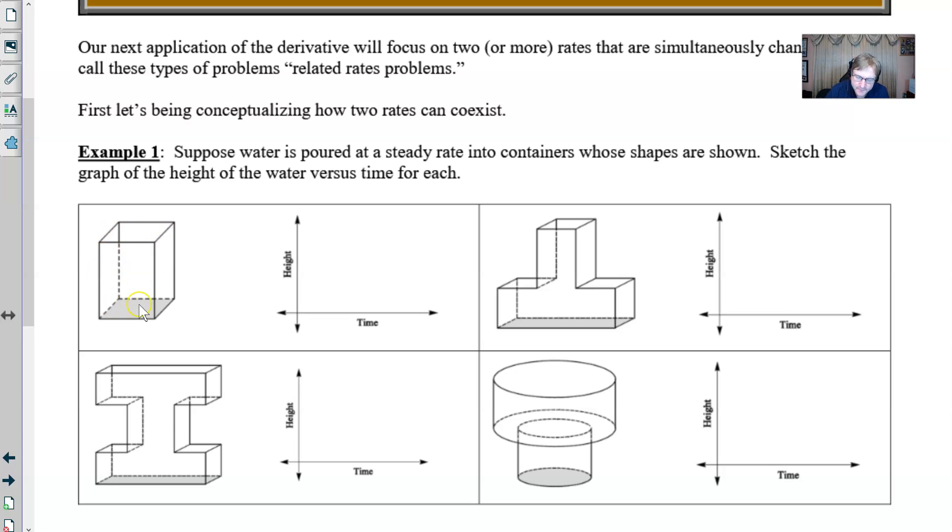If you look at this first example it's just a nice rectangular prism type of container and as water is poured in at a steady rate we notice that the height is very likely going to grow very steadily as well. In fact this height will grow as a single linear type of depiction and so at time zero when there's no height we could start very likely right about here and then your sketch would just have to have some kind of a positive slope.